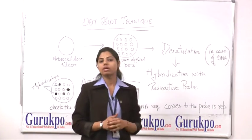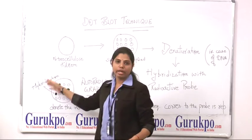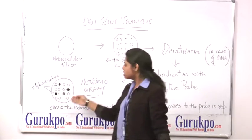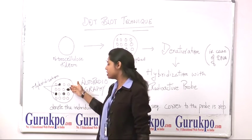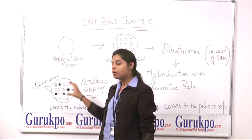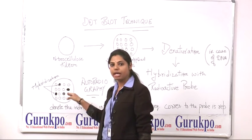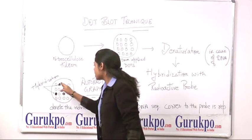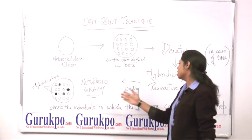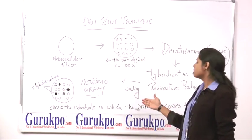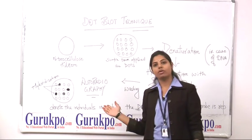After this washing, this sheet is placed on the autoradiograph. This autoradiograph shows which sample is matched — which sample's DNA or RNA is similar. This hybridization denotes the individuals in which the DNA sequence corresponds to the probe, indicating whether it is represented or not.